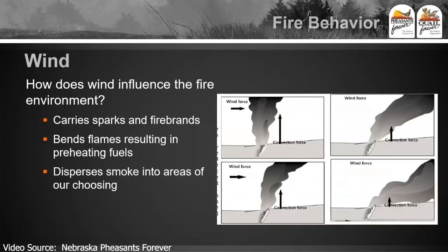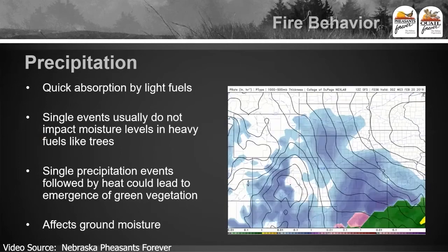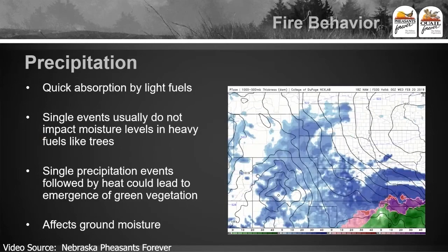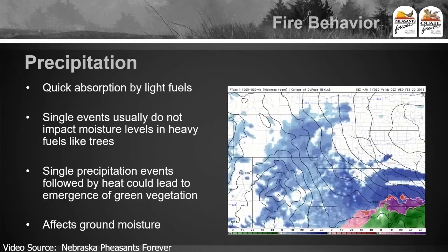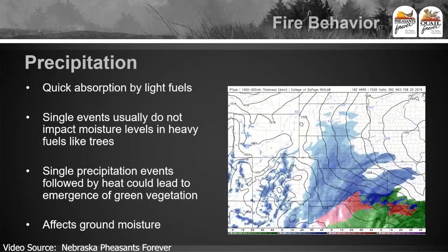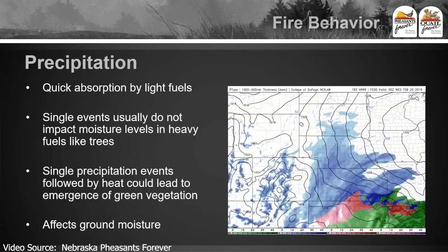Wind can carry sparks and firebrands across our fire line. It can also bend the flames which preheats the fuels, but it can also disperse smoke in areas of our choosing, which is a good thing. Precipitation can rain a little bit in the morning in grassy fuels, and by the afternoon you potentially could burn pretty well. Single events don't usually impact moisture levels in heavy fuels like trees — it takes a longer time to soak that up.